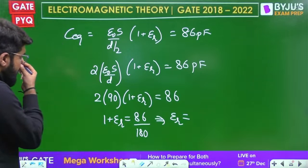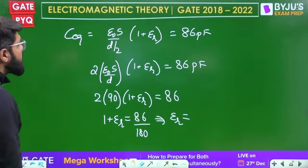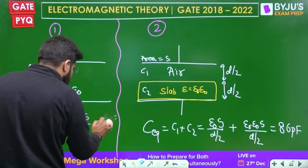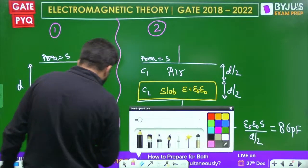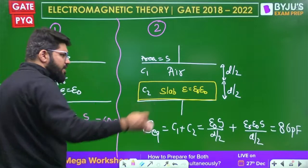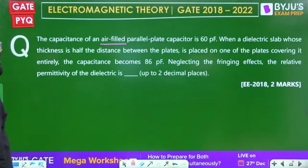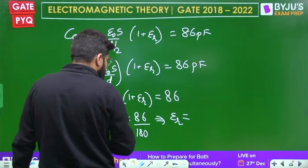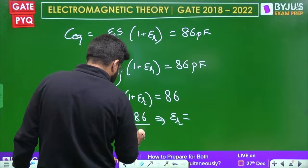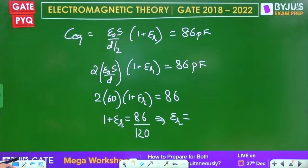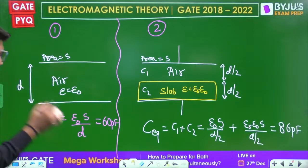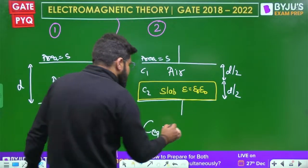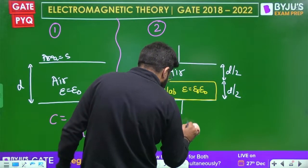Wait - I made an error earlier using parallel instead of series formula. Let me correct: series capacitance C_eq = C₁C₂/(C₁+C₂). With C₁ = 120 pF and C₂ = 120εᵣ pF, we get 120×120εᵣ/(120+120εᵣ) = 86. Simplifying: 120εᵣ/(1+εᵣ) = 86, giving 120εᵣ = 86 + 86εᵣ, so 34εᵣ = 86, therefore εᵣ = 86/34 ≈ 2.53.